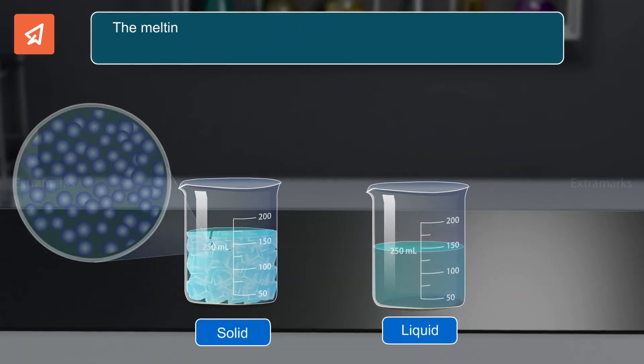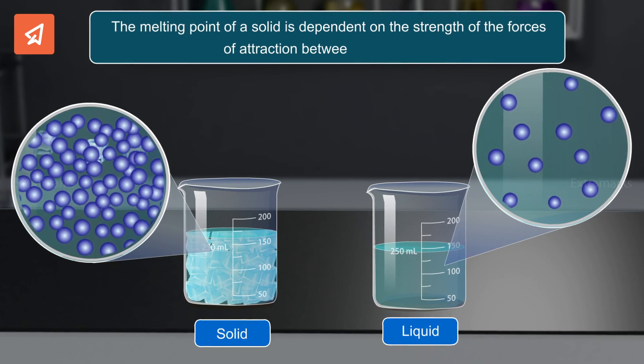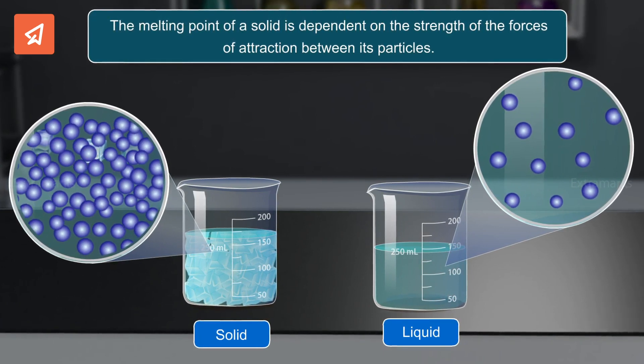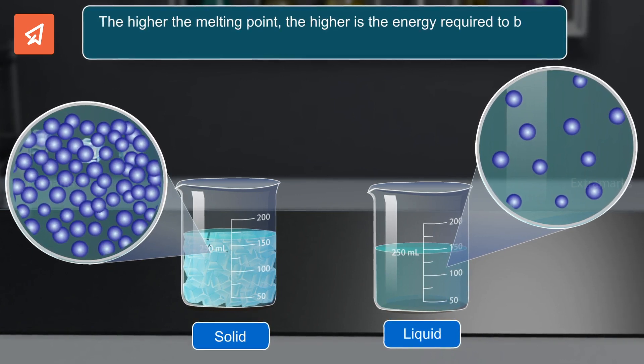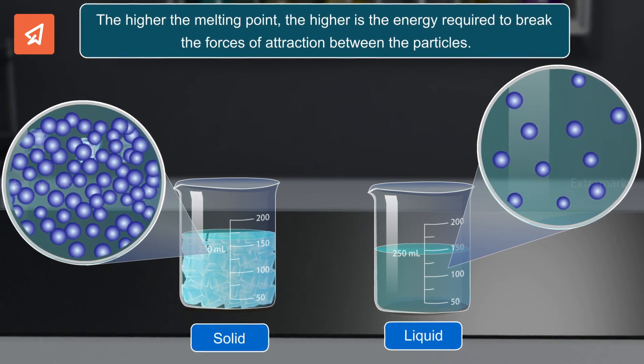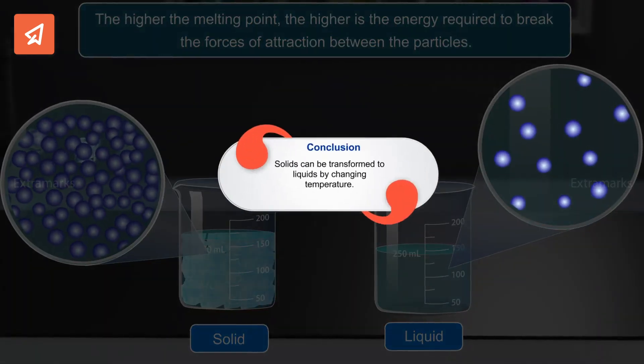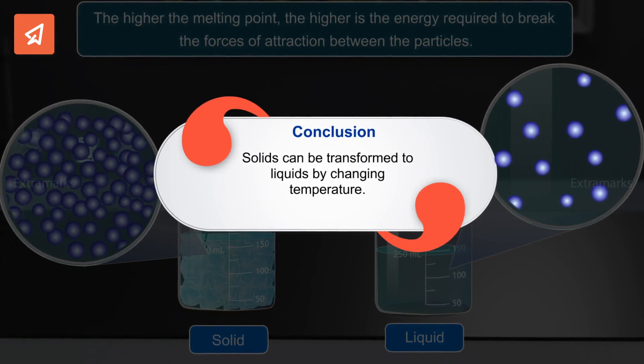Do you know the melting point of a solid is dependent on the strength of the forces of attraction between its particles? The higher the melting point, the higher the energy required to break the forces of attraction between the particles. So it can be concluded that solids can be transformed into liquids by changing the temperature.